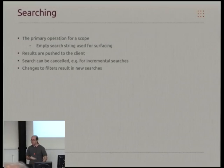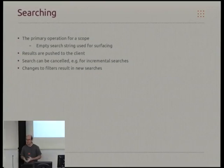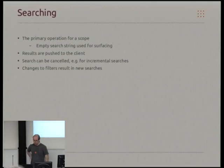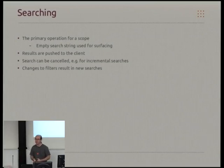The main operation we perform on one of the scopes is a search. The surfacing mode I was talking about earlier, we handle that as a search for the empty string. For instance, if we're searching for files, we might display a list of the recently used files. For music, you might display highly rated music. The scope pushes the results through to the client, but since we're doing incremental results and scopes might be slow, the scope needs to stop sending results when it's told to cancel a particular request, because you type in half a word and it starts searching. You finish off the word and you want to start the next search as soon as possible, rather than waiting for an old one to go through.